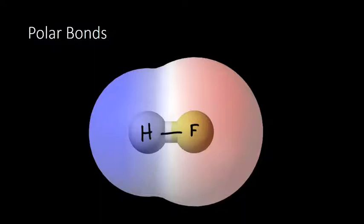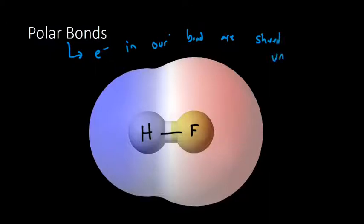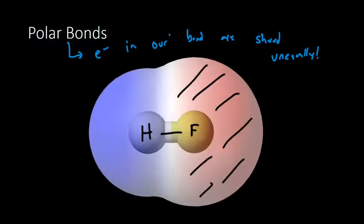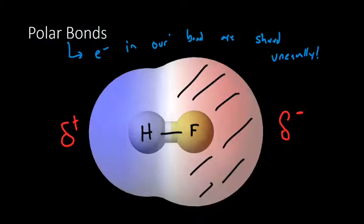Polar bonds are when electrons are shared unequally — so one atom has more than another. In this case, fluorine really tugs on those electrons and pulls them towards itself. That big red cloud you see around it is a bunch of extra electron density pulled over from hydrogen, so it's winning that battle for electrons. We can indicate that with the Greek letter delta: a minus sign if it has more electrons, a plus sign if it has fewer. So here hydrogen is delta-positive and fluorine is delta-negative.